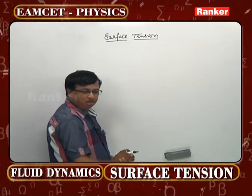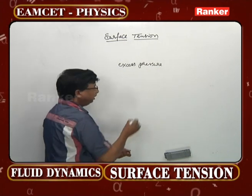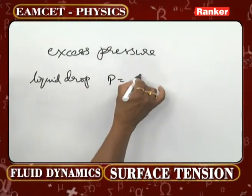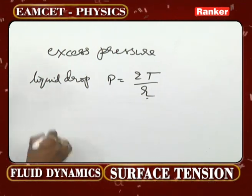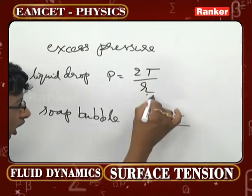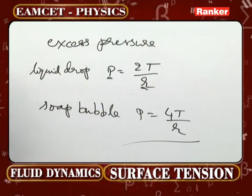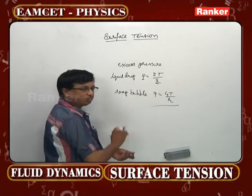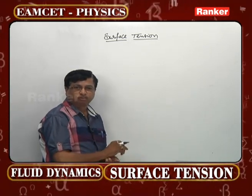For excess pressure inside a liquid drop, the formula is 2T/r. For a soap bubble, it is 4T/r — two times that of a drop — because a soap bubble has two effective surfaces. Pressure is inversely proportional to r: the smaller the bubble, the greater the pressure. These are the major equations to remember before attempting applications.